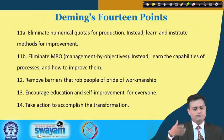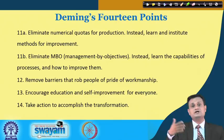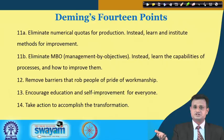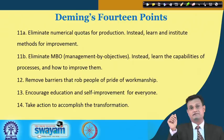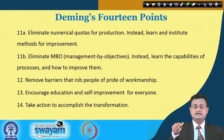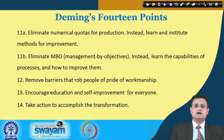Point 12: remove barriers that rob people of pride of workmanship. People working at different levels often do not derive equal pride in executing their work, and there are bureaucratic barriers, too much administrative procedure, and lack of empowerment. Deming strongly advocates removing such barriers. Point 13: encourage education and self-improvement for everyone — people can be trained, but also encourage self-learning in their functional processes. Point 14: take action to accomplish the transformation.